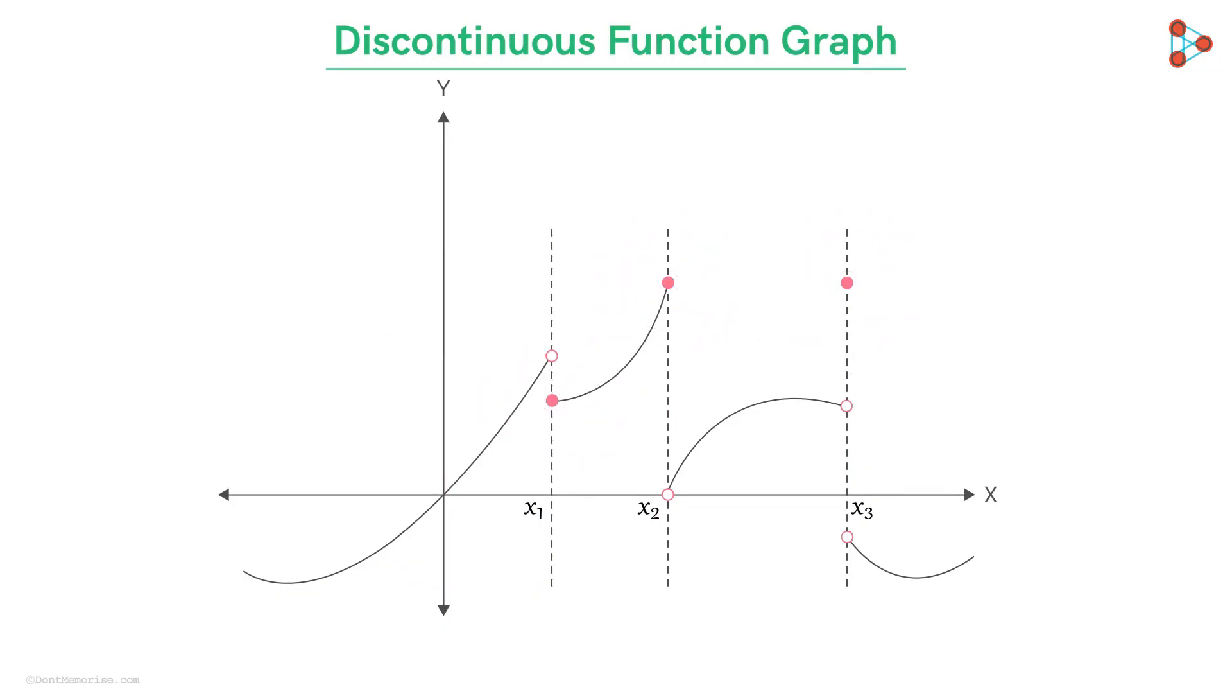And these circles are made to mark the position where the function is defined at those points of discontinuity and where it isn't. For instance, at point x1, you can see without any sort of mark, it will be difficult to tell if the point with coordinates x1, f of x1 is connected with the left portion of the graph or with the right.